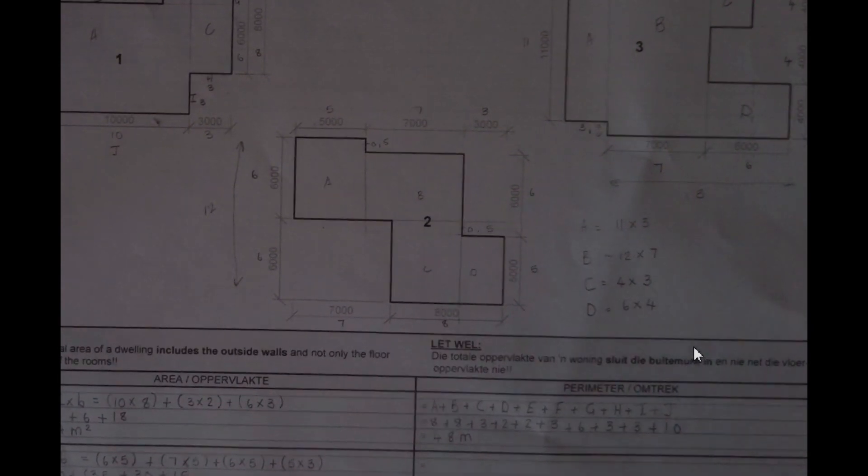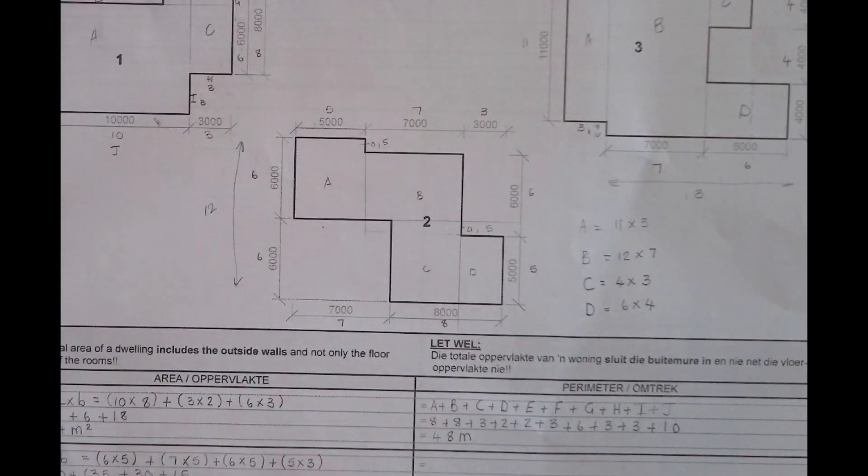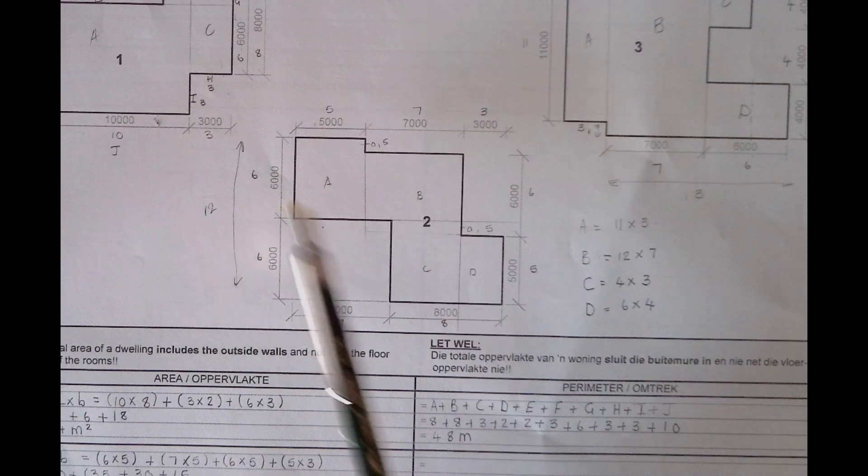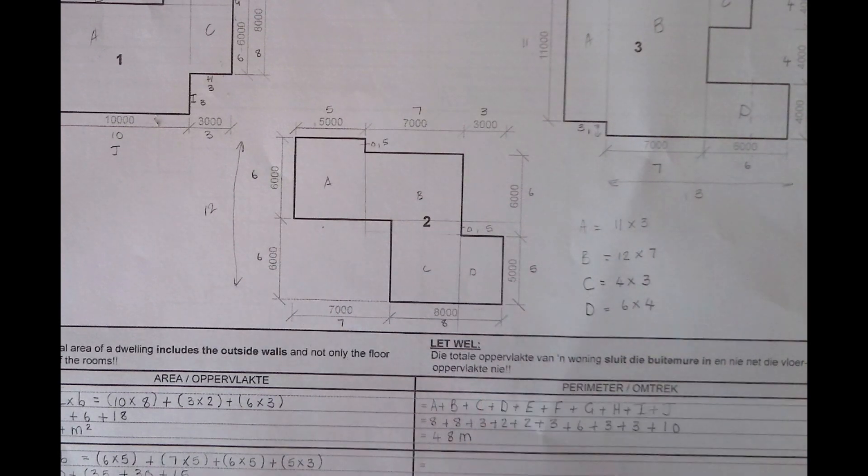For the second one, we have one, two, three, four, five, six, seven, eight, nine sides. So with that we should be able to get A up to I. You get A plus B plus C plus D plus E plus F plus G plus H plus I. Now let us figure out the dimensions.